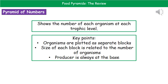Welcome to our review on food pyramids. We're going to look at the two different types of pyramid that we can use to demonstrate different feeding relationships. The first one is the pyramid of numbers, which just shows us the number of each organism at a trophic level.